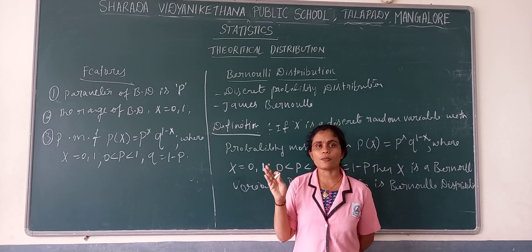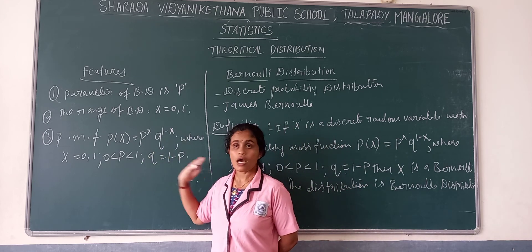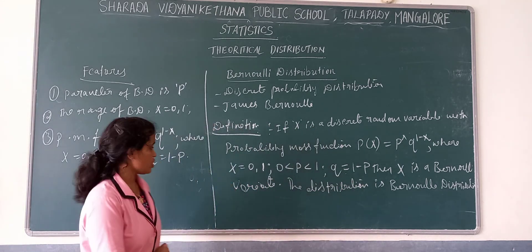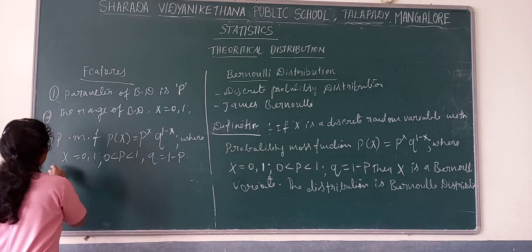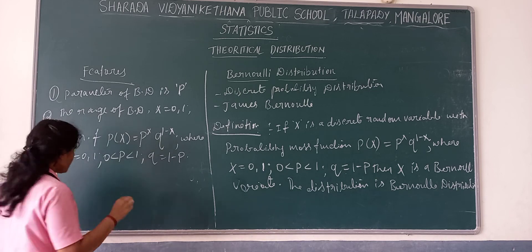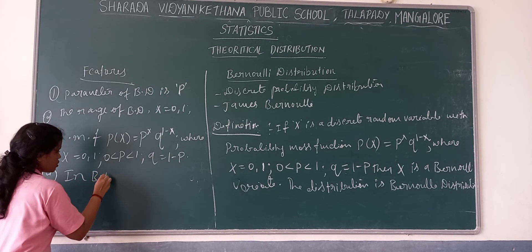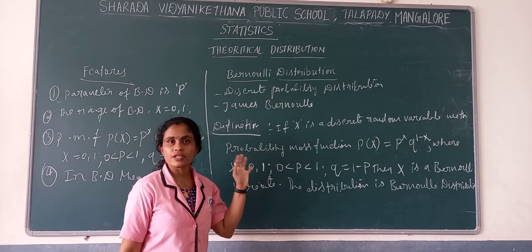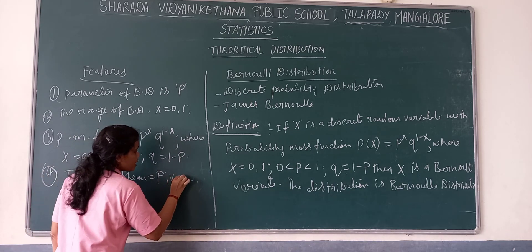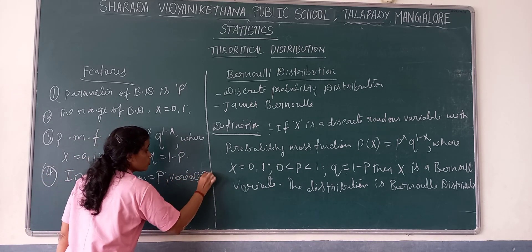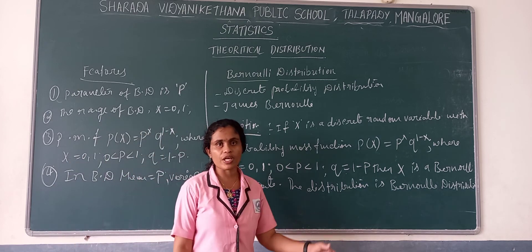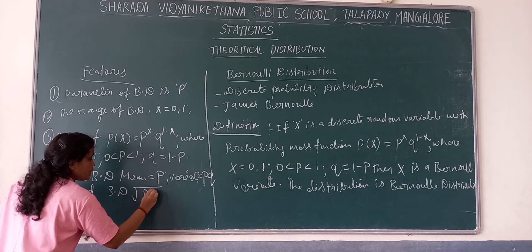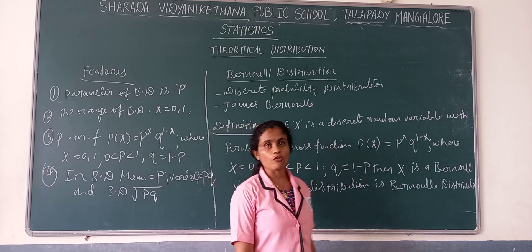If the question asks to write the probability mass function of Bernoulli distribution, you write P(x) = P^x × Q^(1−x). The range is x = 0 and 1, and the parameter is P. In Bernoulli distribution, mean = P — the parameter itself is the mean. Variance = PQ, and standard deviation = √(PQ).